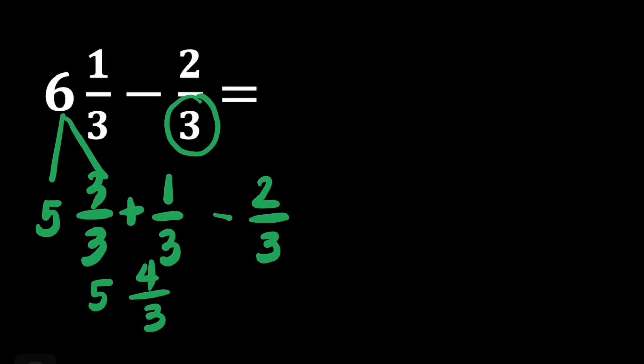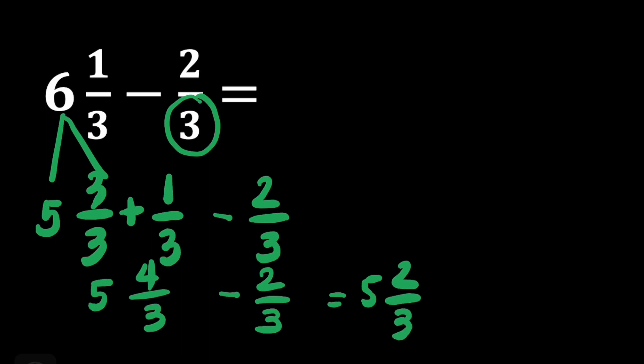Then subtract 2 thirds. Perform the subtraction of similar fractions. We'll have 5, then 4 minus 2 is equal to 2 thirds. Our answer for this question is 5 and 2 thirds.